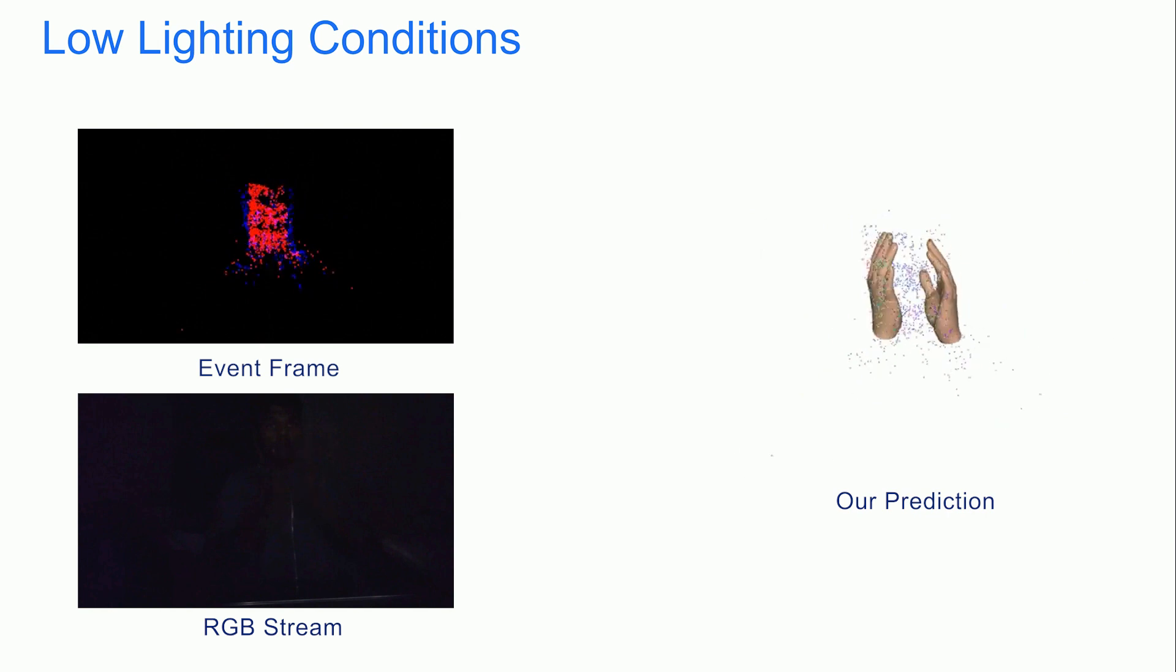Due to the high dynamic range of event cameras, Ev2Hands can reconstruct hands under extremely low light conditions, while the methods using RGB cameras would usually fail.